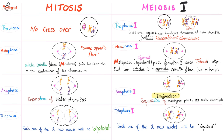Telophase: in mitosis each one of the new nuclei will be diploid, which means 2N. But in meiosis one they are haploid, which means just 1N.